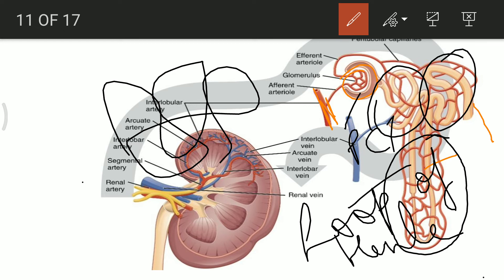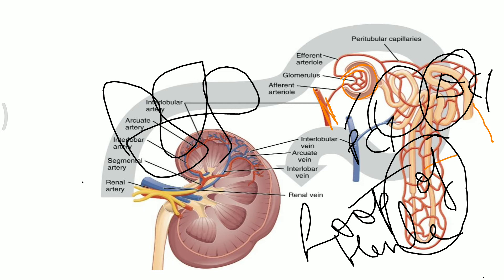Each structure of the nephron plays a significant role in blood filtration. Blood purification means the blood is made devoid of vitamins, proteins, nitrogenous substances, and excess water — all selectively expelled with the help of the nephron. Only pure deoxygenated blood is passed from the renal vein back to the vena cava.